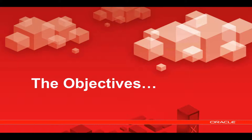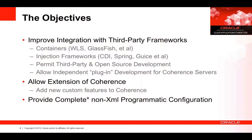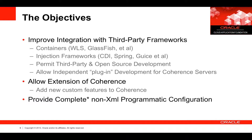Let's talk about the objectives. We had many objectives for improving Coherence 12.1.2. Specifically we wanted to improve the ability to integrate with third-party frameworks — particularly to improve our integration with containers, certainly WLS, Glassfish, etc. We also wanted to improve how customers work with injection frameworks — those using CDI, Guice, Spring, etc. In the past, dealing with this in Coherence required a little bit more development than we liked, so we wanted to certainly improve this area.